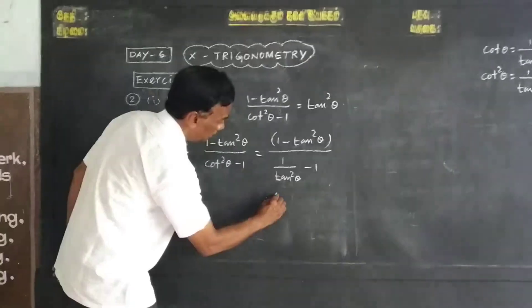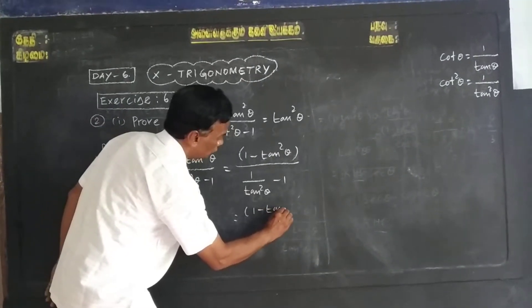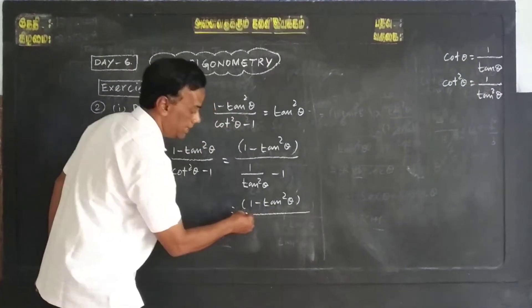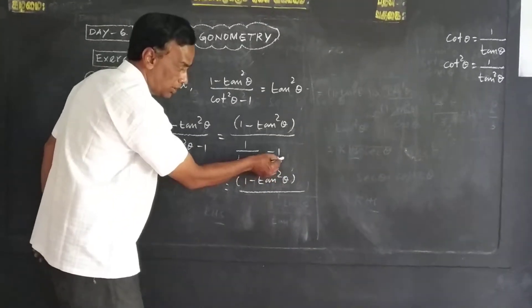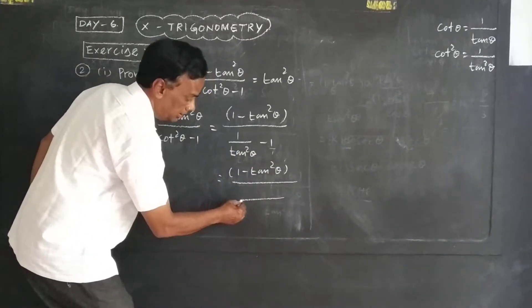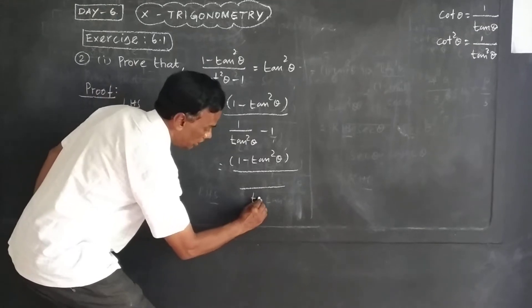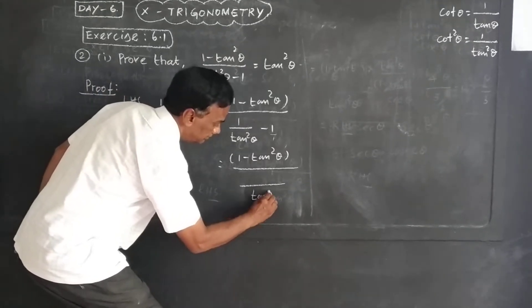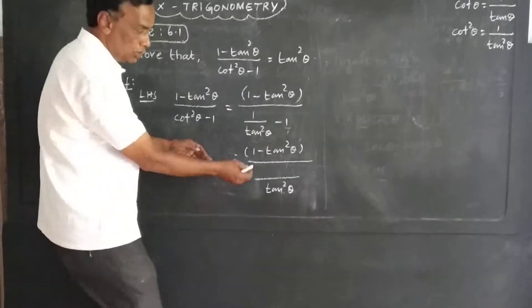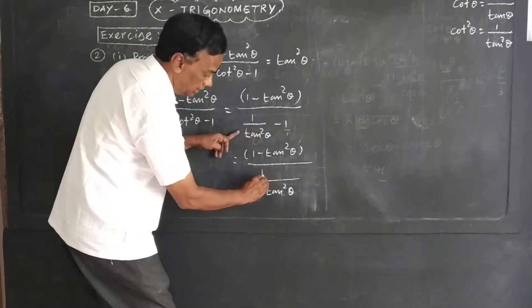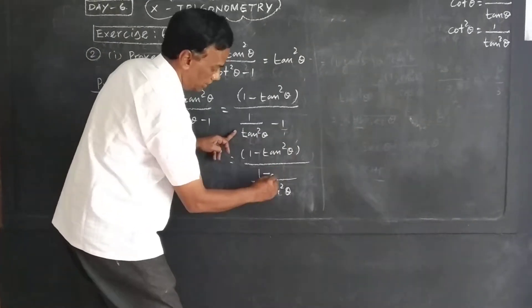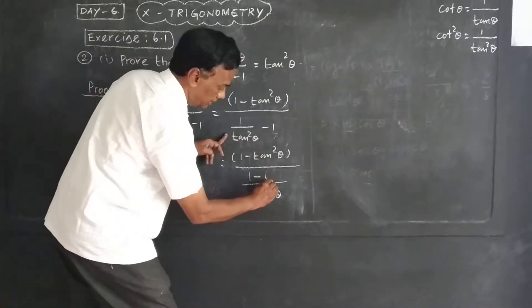It is minus 1 minus tan squared theta by — this is the same thing. If you have to write, tan squared theta is 1 minus tan squared theta. Here is the same thing: 1 minus tan squared theta. Tan squared theta.